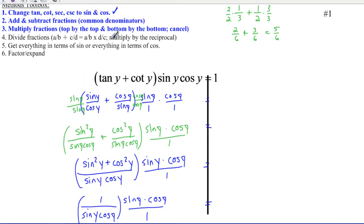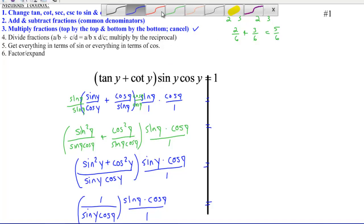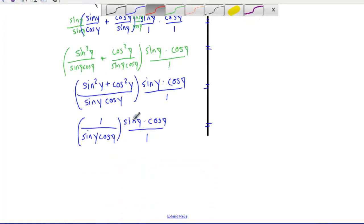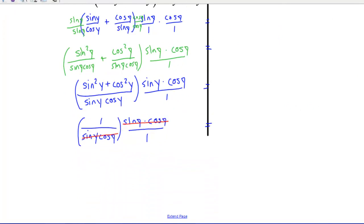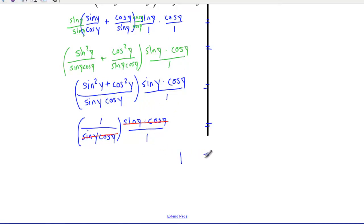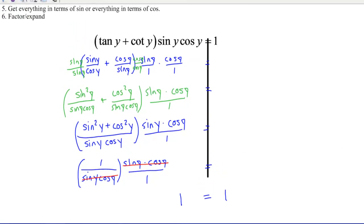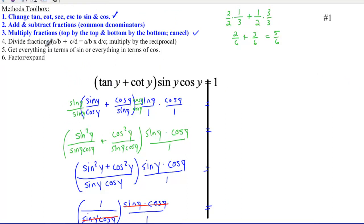Multiply fractions — top by the top, bottom by the bottom — but I can also cancel. Sine y cosine y is on top and sine y cosine y is on the bottom, so everything cancels. I have 1 on top and 1 on the bottom, which equals 1. And that's exactly what I had on the right side the whole time. So I've proven that tangent y plus cotangent y, times sine y cosine y, equals 1 — using three of my six methods from the toolbox.